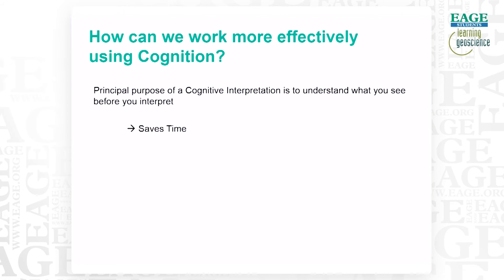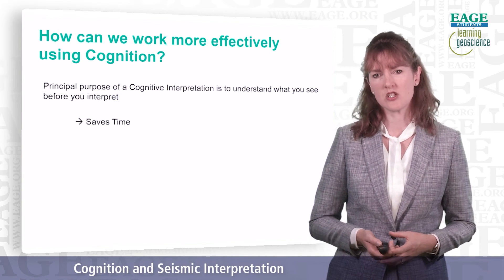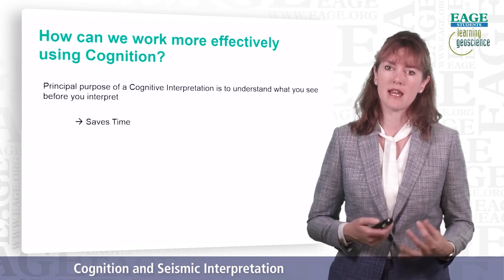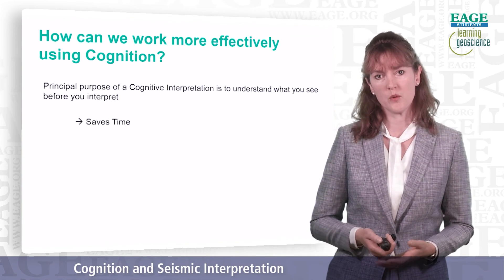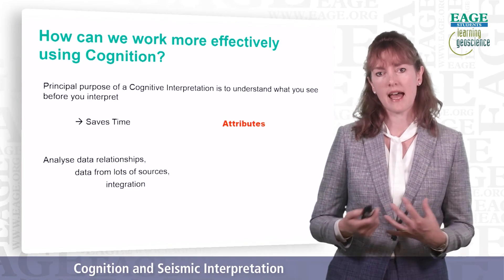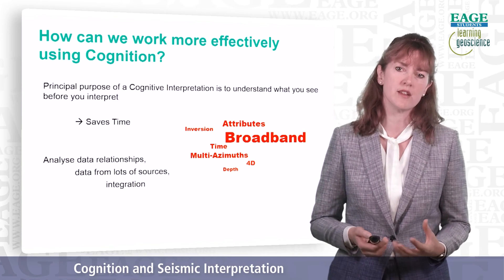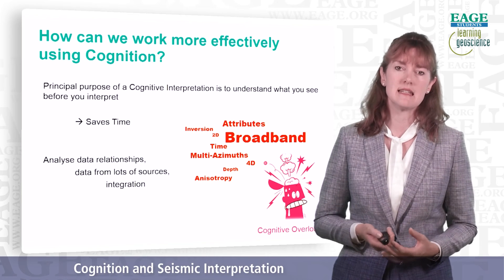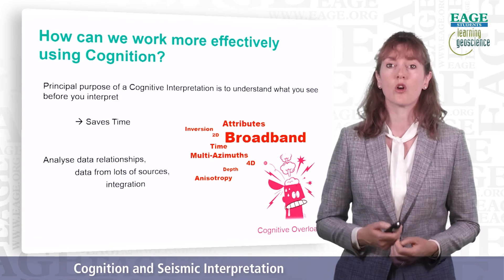So how can we work more effectively using what we know about cognition? The principal purpose of a cognitive interpretation is to really understand what you're looking at before you spend time interpreting it — this will save you a lot of time. This means bringing in data to analyse relationships from lots of different sources and integrating it together. But this can very quickly lead to cognitive overload, so doing this in a way that doesn't lead to cognitive overload is important.